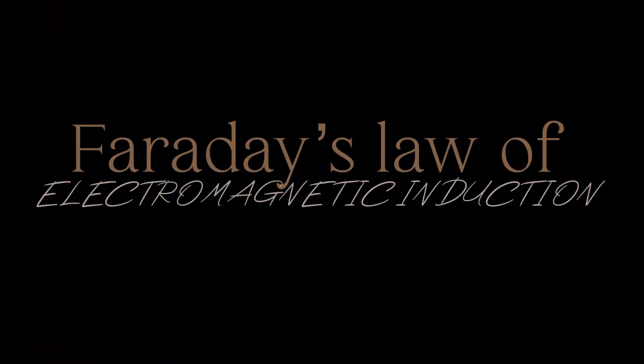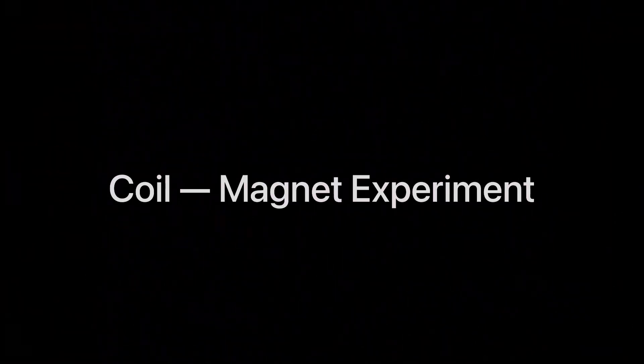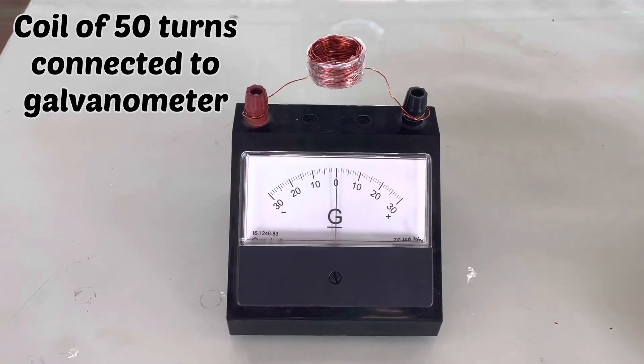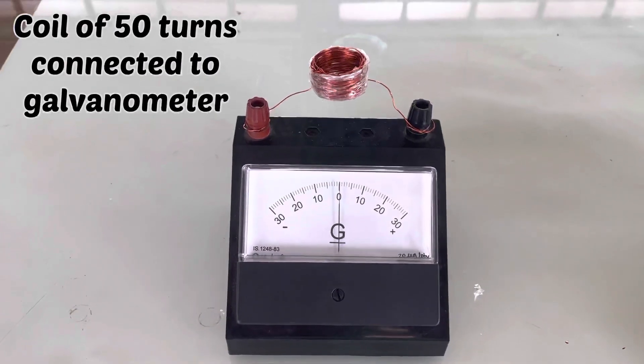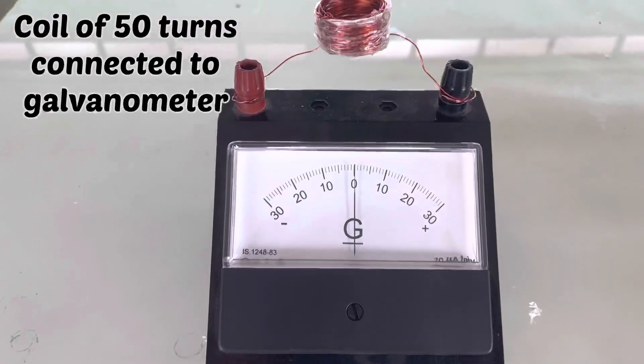Faraday's Law of Electromagnetic Induction. Coil Magnet Experiment. A coil of 50 turns is connected to a galvanometer in a very simple way as we see.